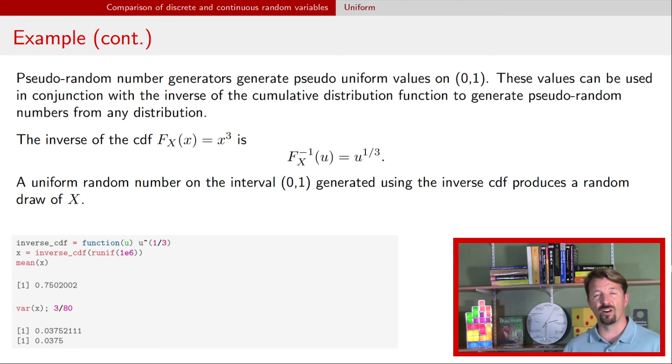Here is that process in R. First we define a function that can calculate the inverse CDF. The next line, we're going to evaluate that function on a whole set of uniform random draws. By default, we draw a standard uniform, that is uniform between zero and one. The 1e3 there means that we're going to draw a million of these.